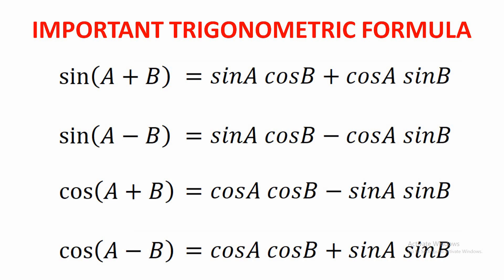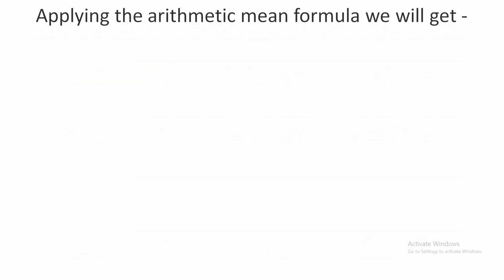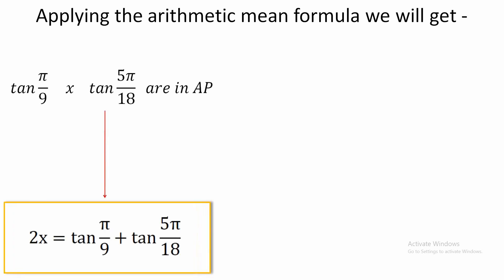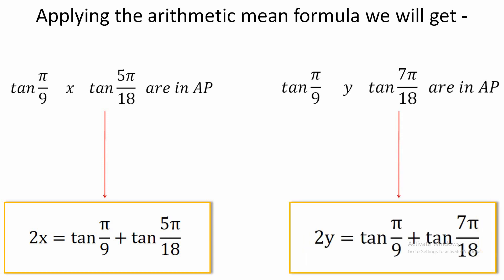Moving to our original question, we are given two different conditions and we apply the arithmetic mean formula to both. In the first condition, tan(π/9), x, tan(5π/18) are in AP, so applying the arithmetic mean formula we get 2x = tan(π/9) + tan(5π/18). Similarly, in the second condition, tan(π/9), y, tan(7π/18) are in AP, so applying the arithmetic mean formula we get 2y = tan(π/9) + tan(7π/18).